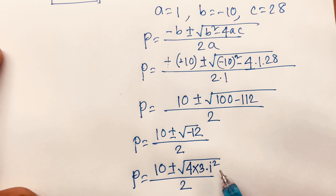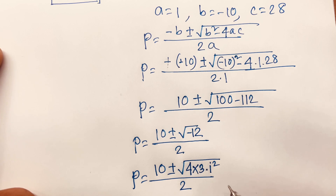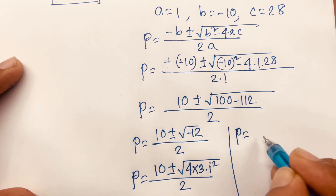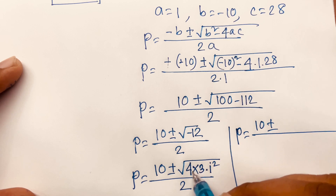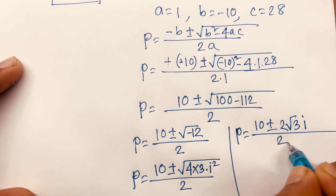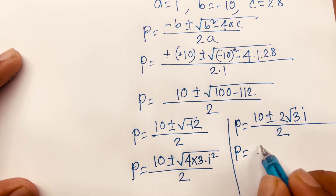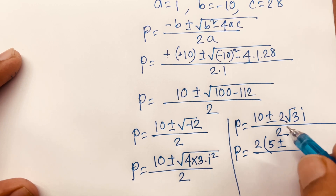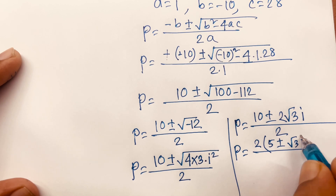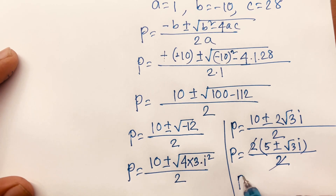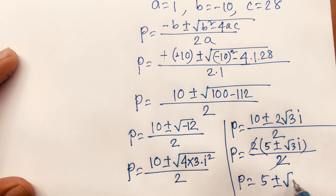We know that i² equals minus 1 and i equals square root of minus 1. So square root of (4 times 3 times i²) equals 2 times square root 3 times i. The expression becomes p equals (10 plus or minus 2√3 i) over 2. Factoring out 2, we get p equals 5 plus or minus √3 i.